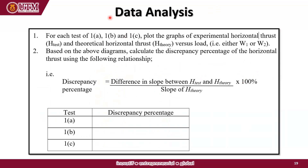For the data analysis, for each test — 1A, 1B, and 1C — plot the graph of experimental horizontal thrust and theoretical horizontal thrust versus load. Based on the plotted graph, calculate the discrepancy percentage of the horizontal thrust using the given relationship.